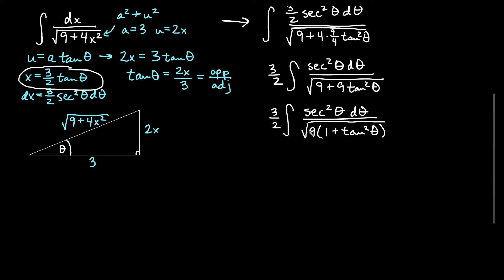If I factor out the square root of 9, that gives me a 3 on the outside, which reduces the 3 on top. So we get 1 half integral of secant squared theta d theta still on top.